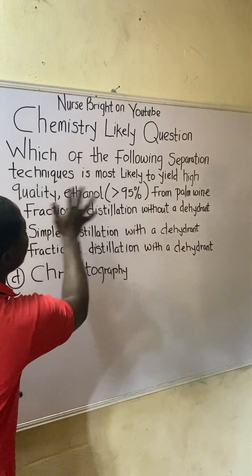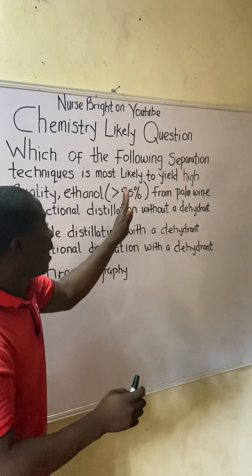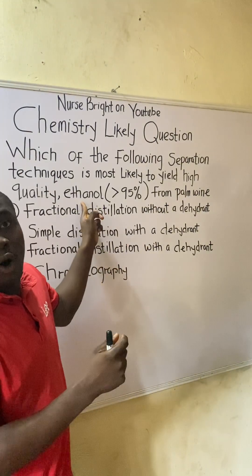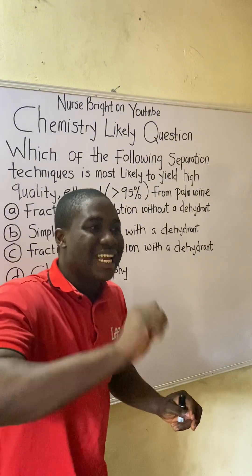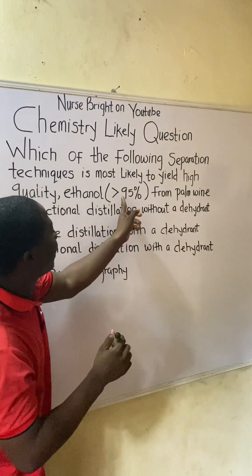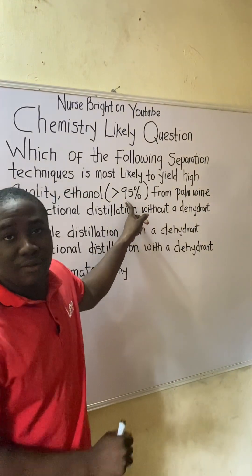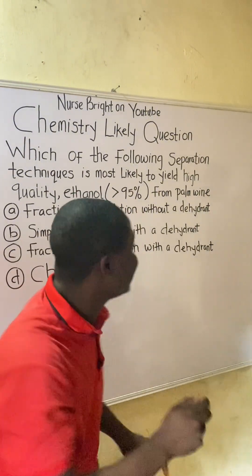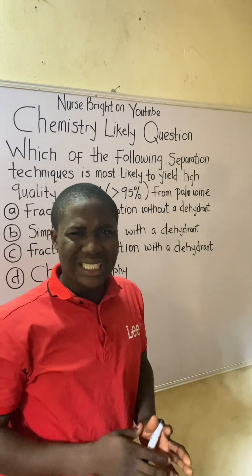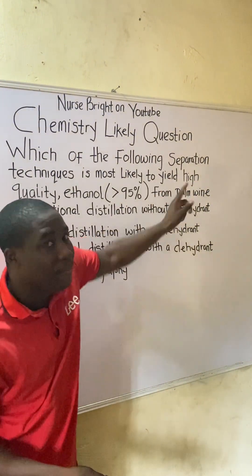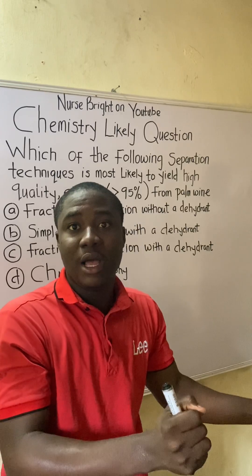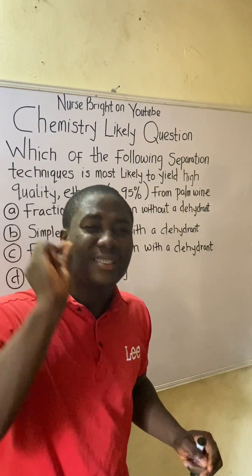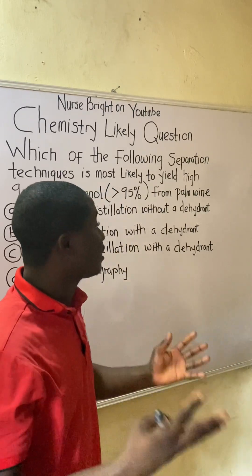They are asking which of the following separation techniques will most likely yield high-quality ethanol. The symbol greater than 95% means the ethanol that will be gotten should be 95% and above pure. So the purity of ethanol to be separated from palm wine should be extremely high — above 95% purity.